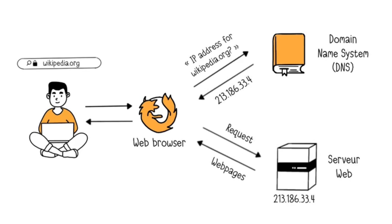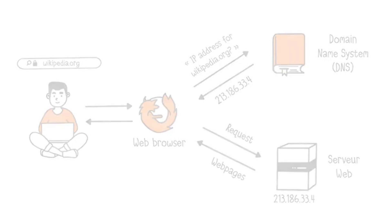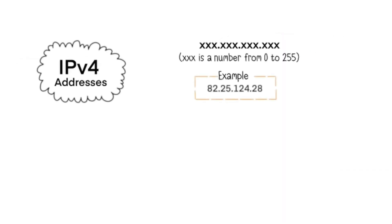Until now, we've seen addresses known as IPv4. In the current IPv4, an IP address is presented in this form, each xx being a number from 0 to 255. With this type of naming, the number of IPv4 addresses is limited to about 4 billion addresses available. Today, almost all of the Internet's IP addresses have been allocated, and there aren't many left.